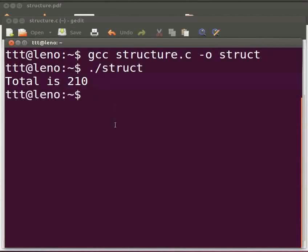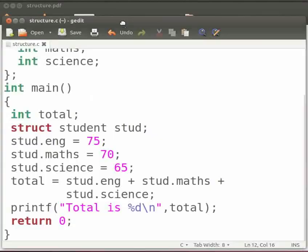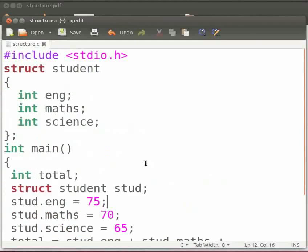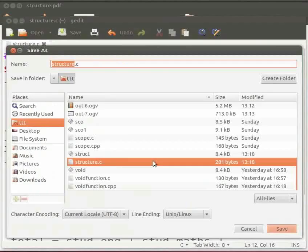Now we will execute the same program in C++. Come back to our program. I will edit the same code. First press shift ctrl and s keys simultaneously on your keyboard. Now save the file with an extension dot cpp and click on save.